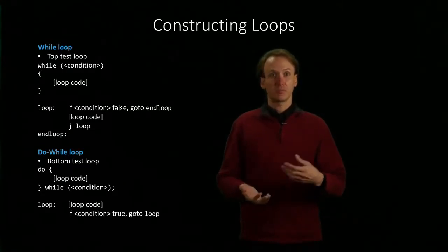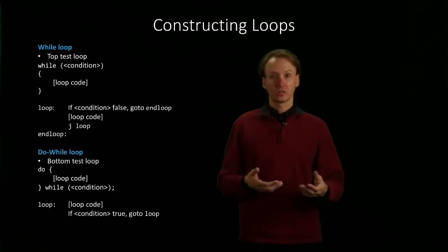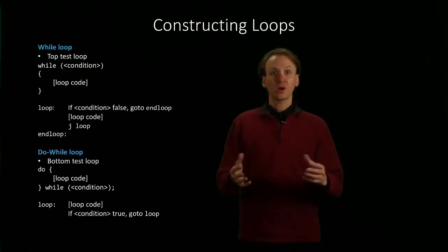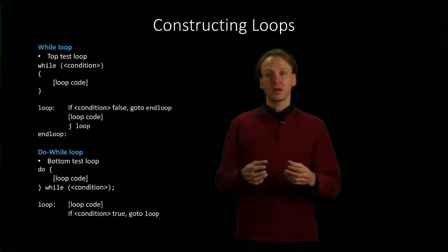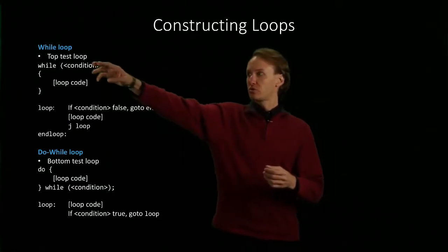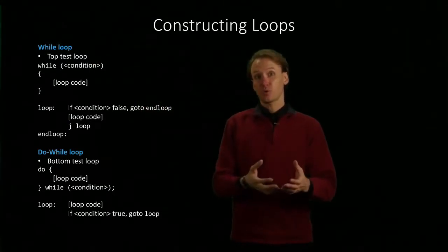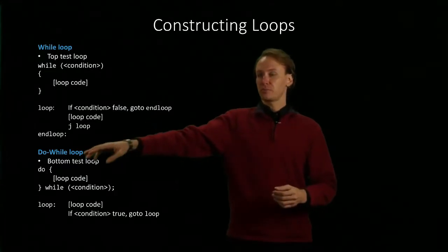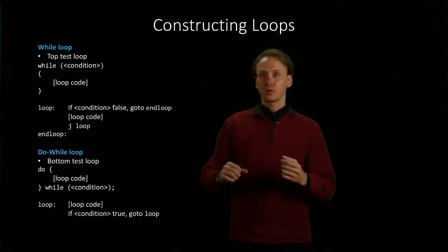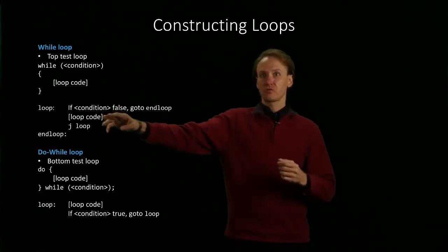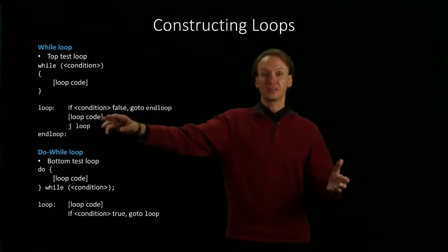We're putting something in there like a branch equals, branch greater than, whatever you need to test your condition. We're setting that up so that if our original condition is false, we're not going to run this loop—we're going to jump to the end of the loop. Otherwise, we just fall through and run whatever code you've got inside this loop.